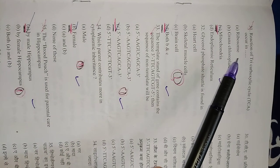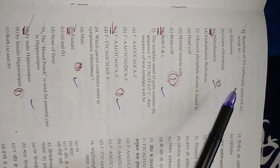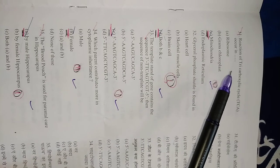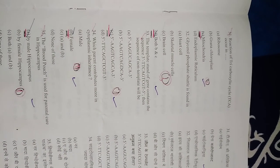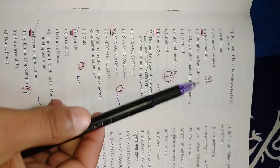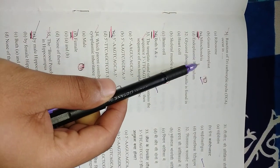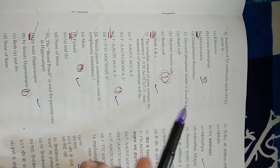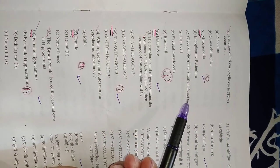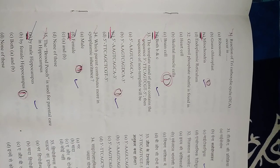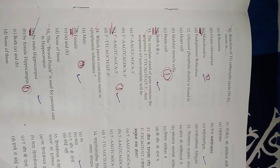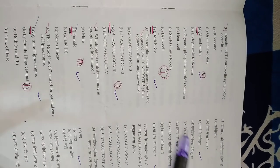Question number 31: Reaction of tricarboxylic acid cycle, that is TCA, also called Krebs cycle or the citric acid cycle, occurs in the mitochondria. So right option is C, mitochondria. Question number 32: Glycerol phosphate shuttle is found in—it is a cycle which uses NADH to produce ATP, so it occurs in the skeletal muscle and brain cells. Right option is D, both B and C.